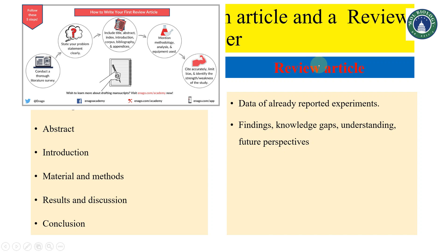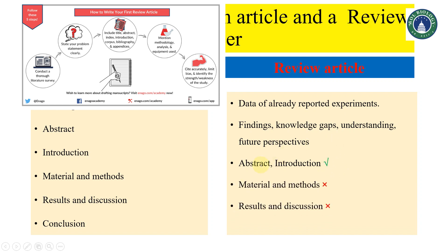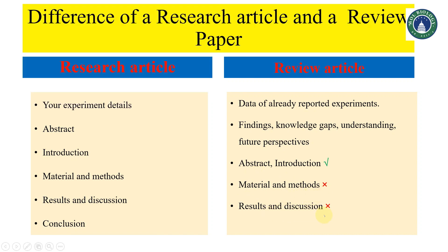All these parts will be discussed in the review article. Comparing sections: the abstract and introduction are present in a review article, just as in a research article. However, two important parts are missing in a review article: there are no materials and methods, and no results and discussion, because you did not conduct your own experiment. The last part — conclusion — is present in a review article. So only those two sections are missing compared to a research article.